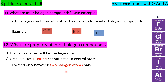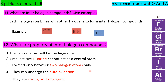Interhalogen compounds are formed only between two halogen atoms. Examples: ClF, BrF, ClF₃. Fourth property: they can undergo disproportionation (auto-oxidation). Fifth property: they are strong oxidizing agents. These five points are very important for answering questions on interhalogen compounds.